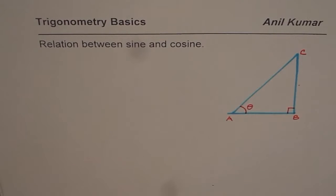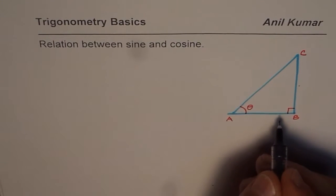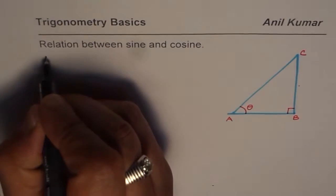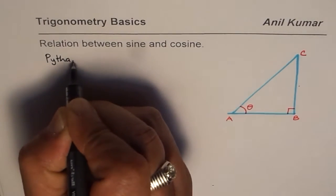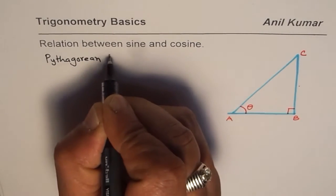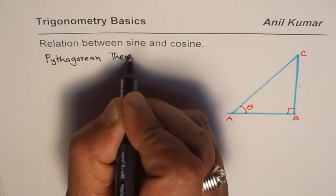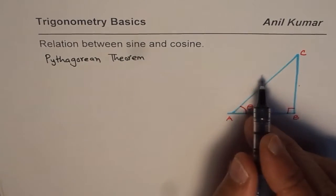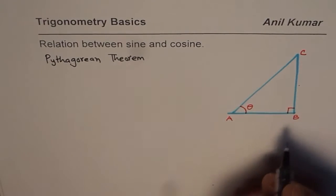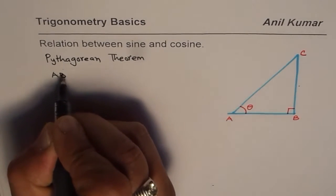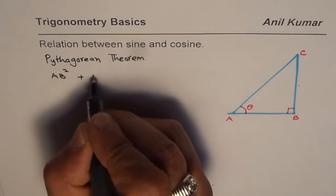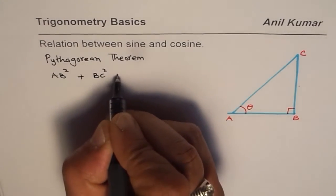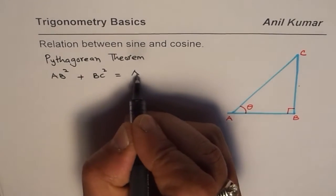Now in this triangle how are the two legs of a right triangle related with the hypotenuse? They are related with the Pythagorean theorem. It relates all three sides of a right triangle. So the relation is AB² plus BC² equals AC², the hypotenuse.